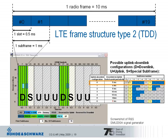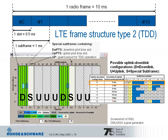Special subframes occur in subframes 1 and 6. Each special subframe carries a downlink pilot time slot — DWPTS — an uplink pilot time slot — UPPTS — and a guard period for TDD operation to switch from downlink to uplink. The downlink and uplink pilot time slots are used for regular data transmission as well, but they are shorter because the special subframe has a specific configuration.